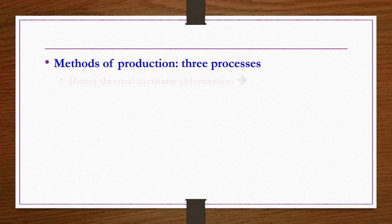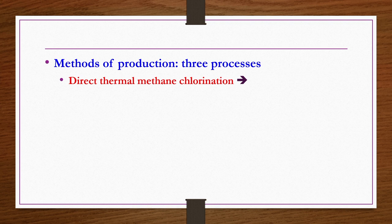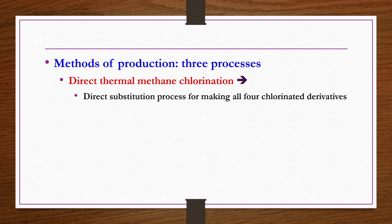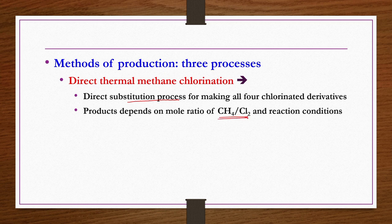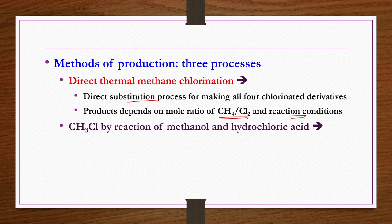Three processes exist for producing chloromethanes. The first is direct thermal methane chlorination, where methane and chlorine at an appropriate mole ratio are heated at 370–400°C depending on desired product distribution. This is a direct substitution process for making all four chlorinated derivatives. The second process involves reacting methanol with hydrochloric acid to give methyl chloride, and can be coupled with the methane chlorination process to utilize the byproduct HCl.